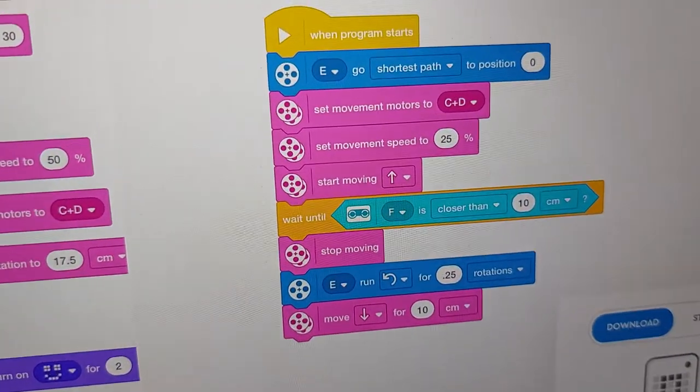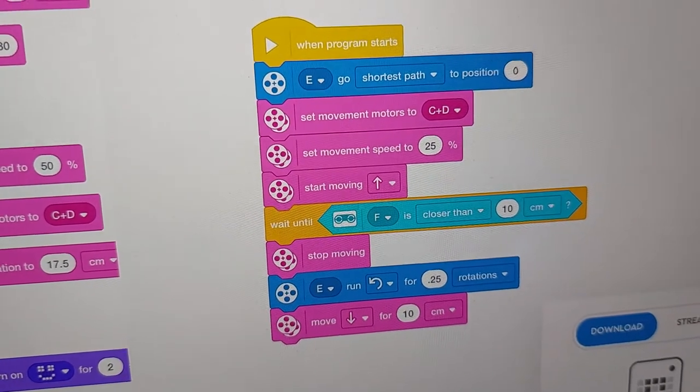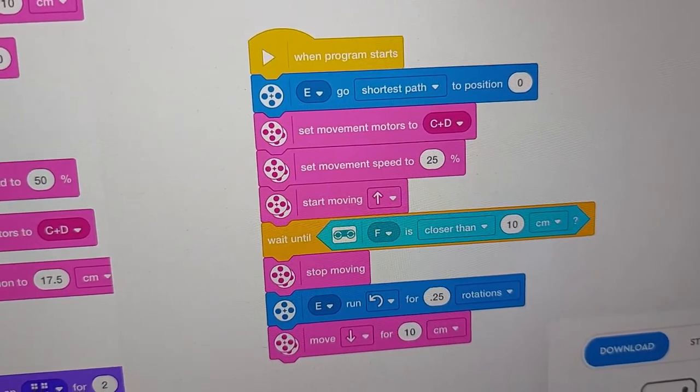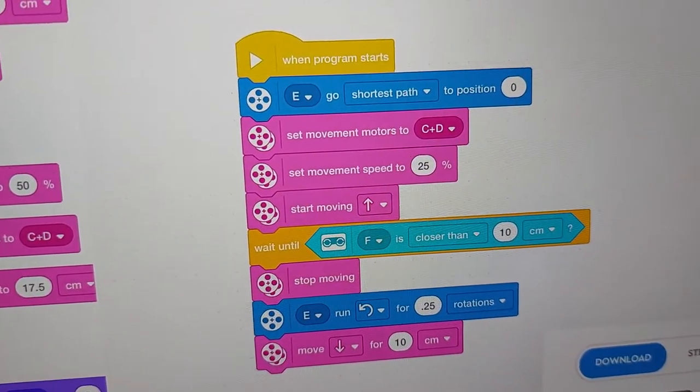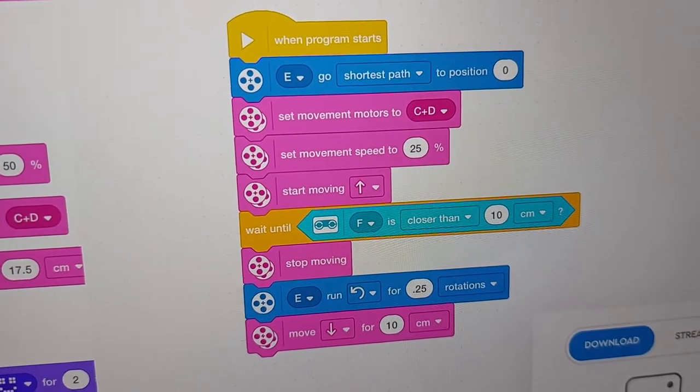So we're doing that by first off resetting the robotic arm. We're using the shortest path, which is really cool because if it's already in the right position it just stays there.